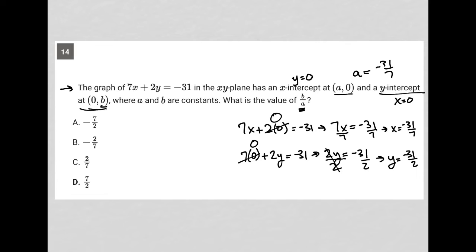Which again is just the b value. Our y here is our y-intercept, so b is equal to negative 31 over 2.